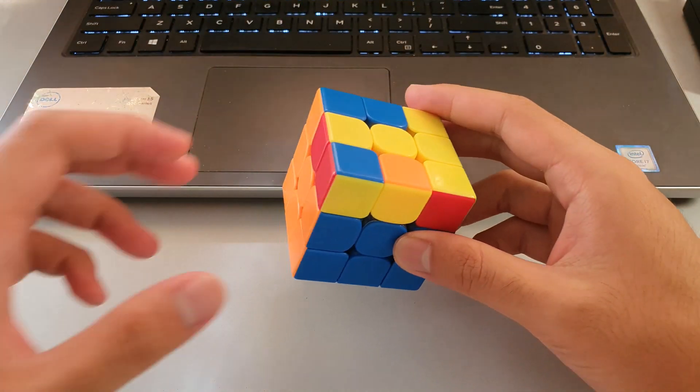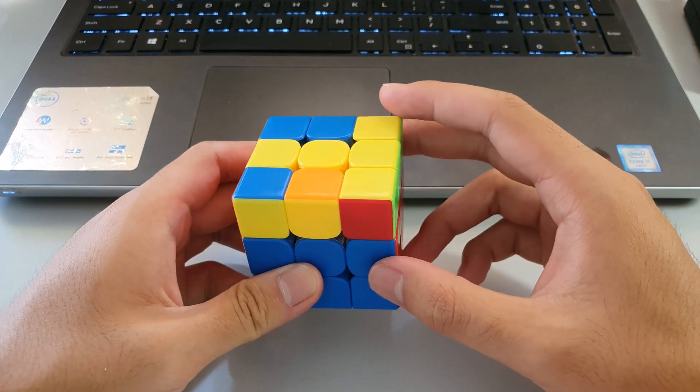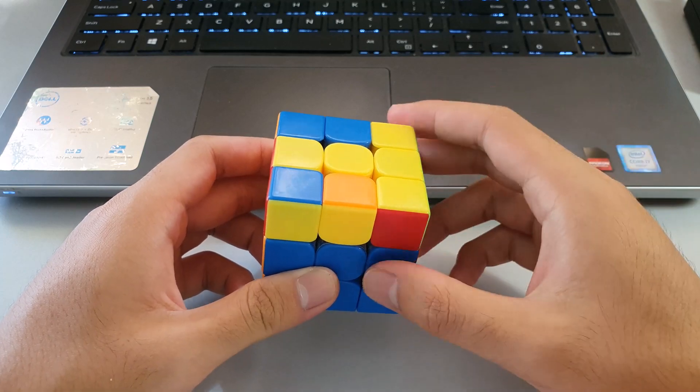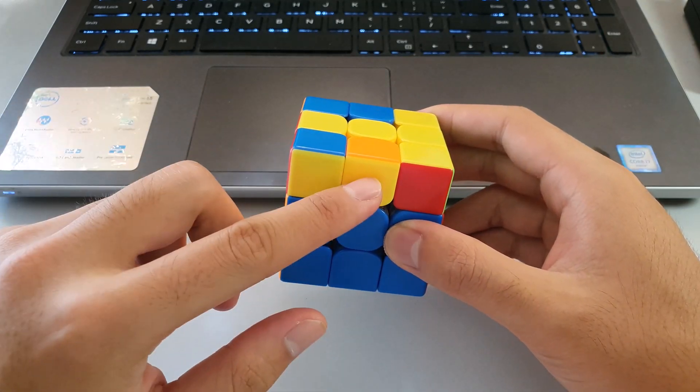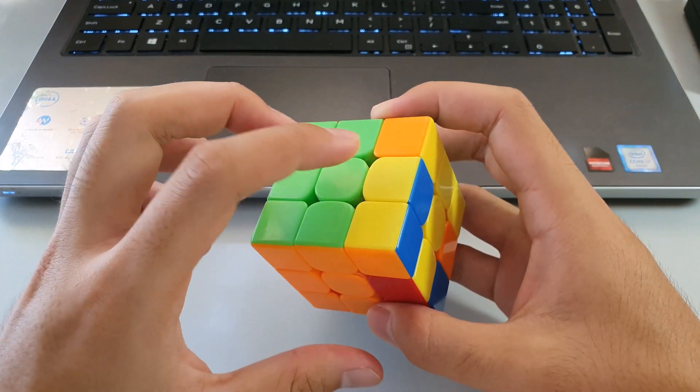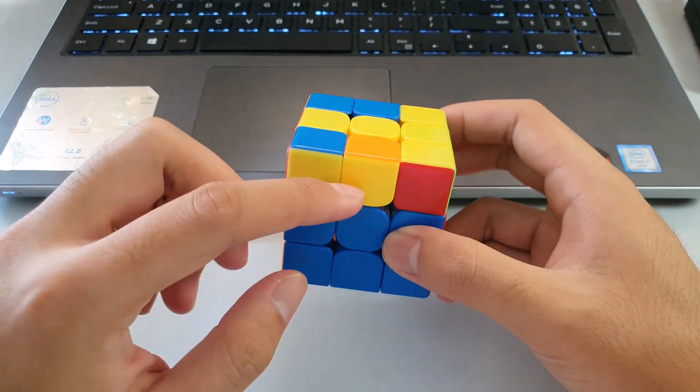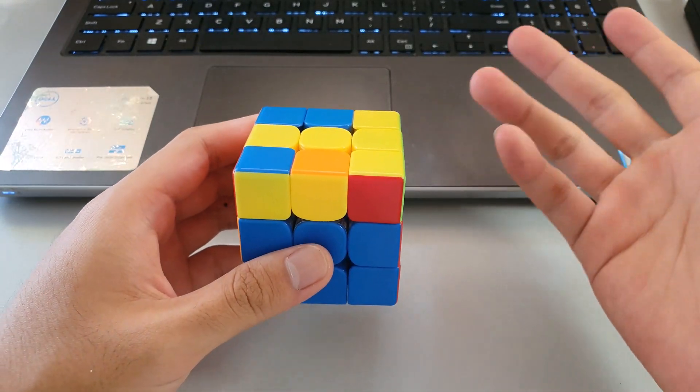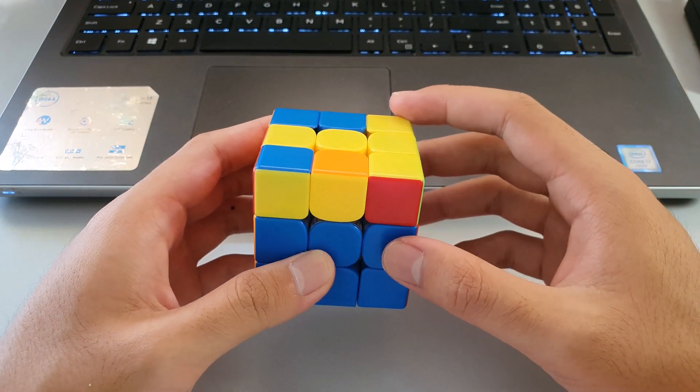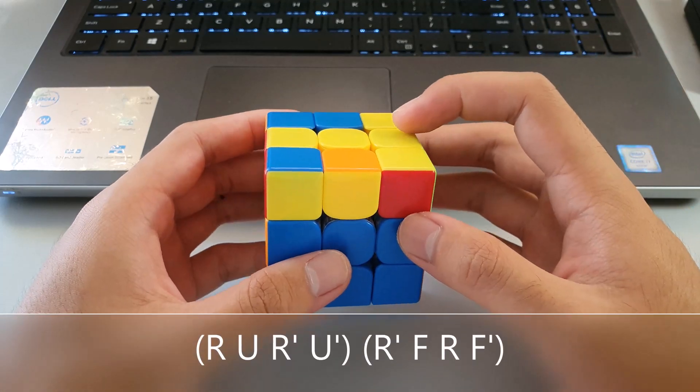The second full OLL case is this T-shape here. If you hold the T-shape horizontally like this, and you have two of these bars on either side, one towards you and one towards the back, then you can use the second half of Y-perm to solve this case, which is just sexy sledge.